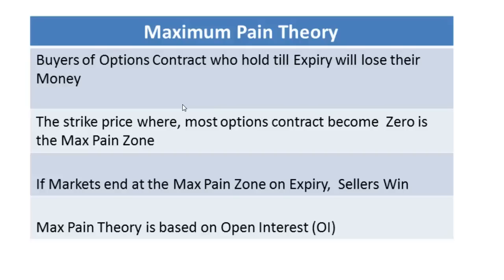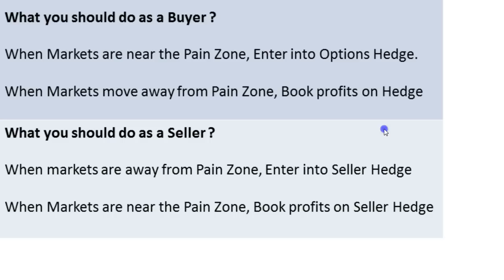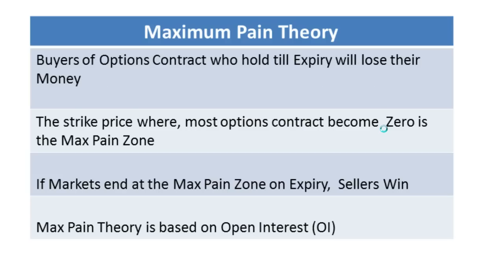The max pain theory is nothing but finding the strike price where most options contracts become zero. The max pain theory tries to find out the strike price where the buyer of the contract will lose most of their money and where the seller will gain the most.